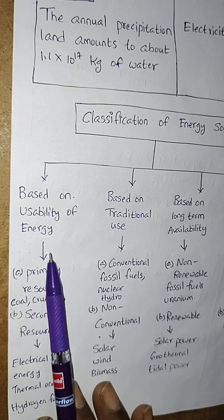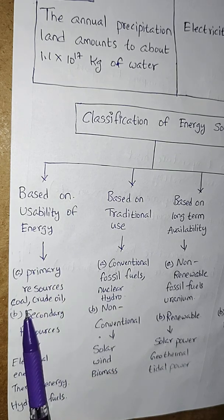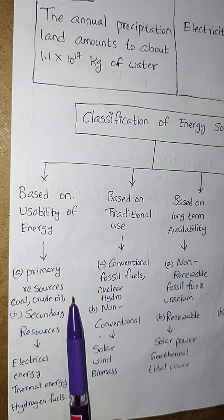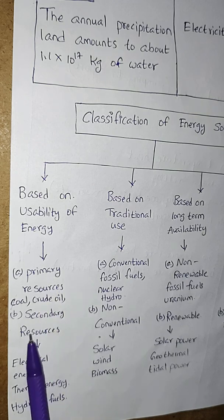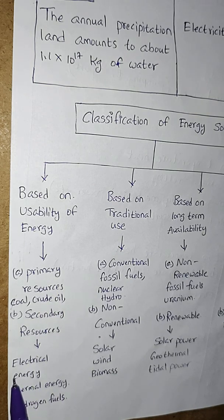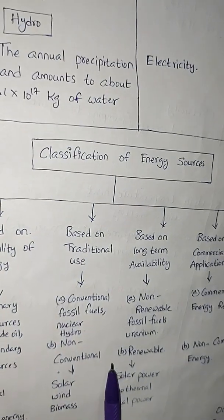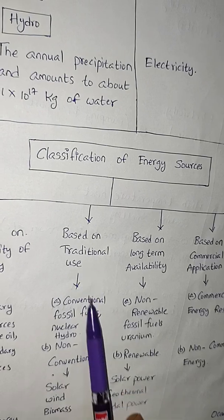Based on usability of energy: primary resources include coal and crude oil, while secondary resources include electrical energy, thermal energy, and hydrogen fuels.